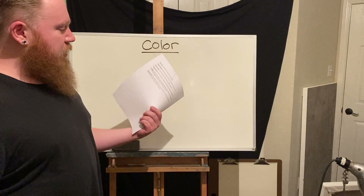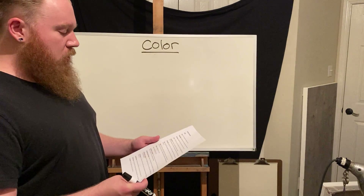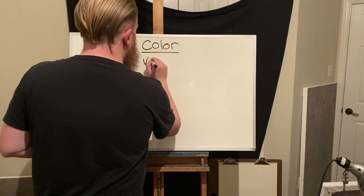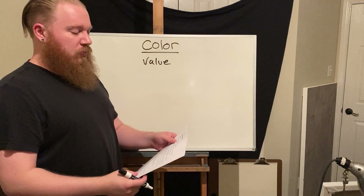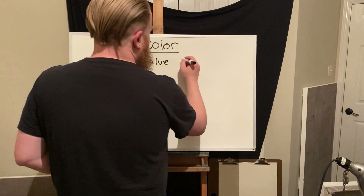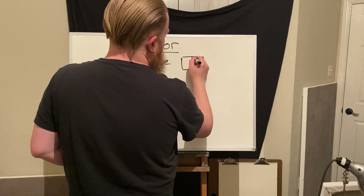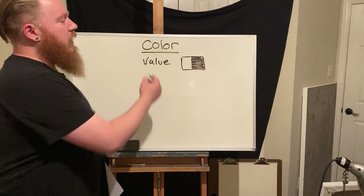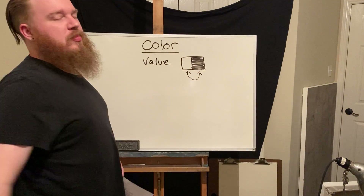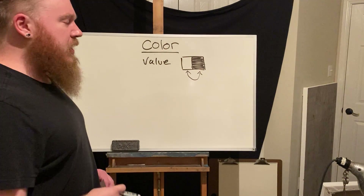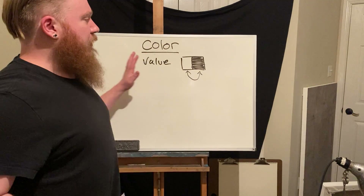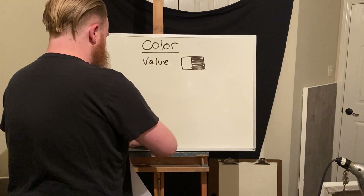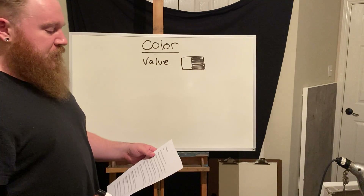There are some major definitions we can talk about in terms of color. First and foremost, we have value. Value refers to the relative lightness or darkness of a surface. If you have one light square and one dark square, value refers to the relationship between our recognition of these two elements. We have a whole gray range within that as well.